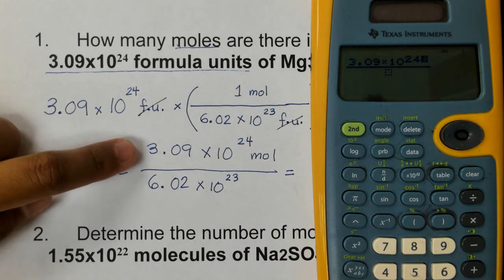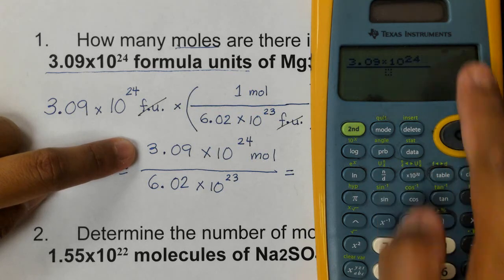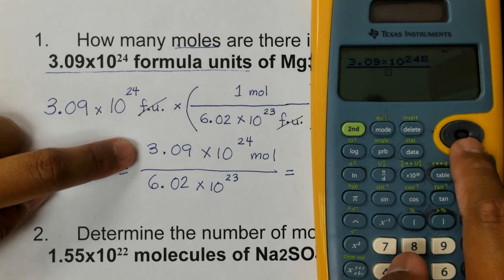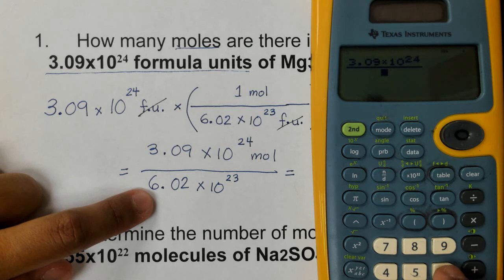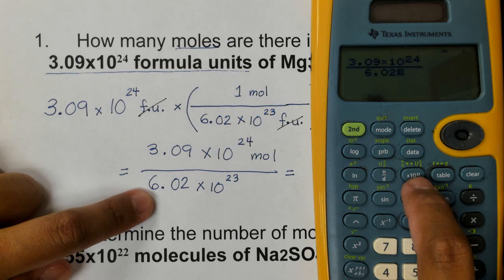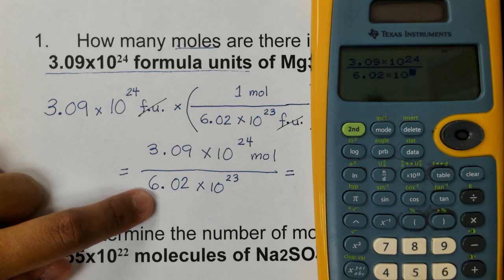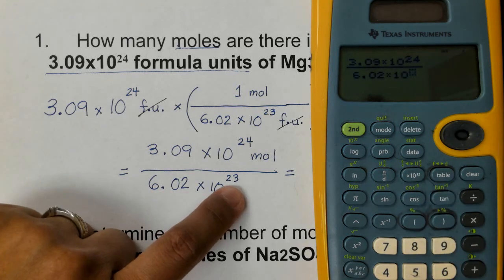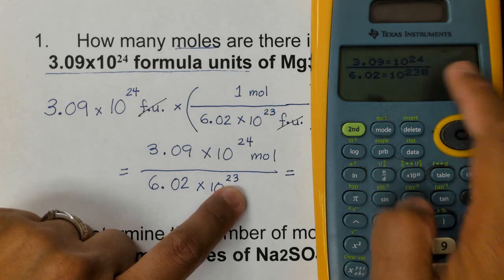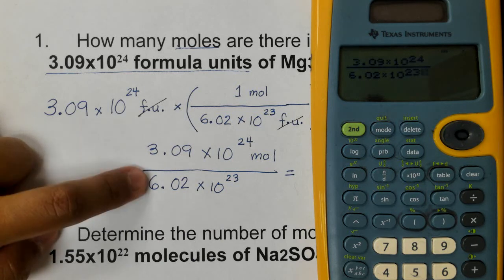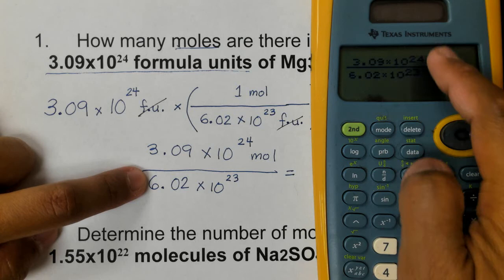Now we are done with our numerator. Let's go down, so you press arrow down to help us input now the denominator. So we're going to input the denominator that is 6.02, and then the exponent is times 10 n again. So press that and then the exponent is 23. Now check whether you have inputted the correct numbers of our given, making sure that the exponents are accurately inputted in the calculator.